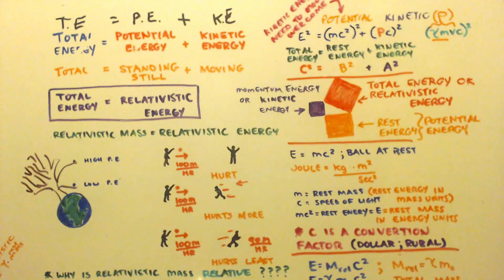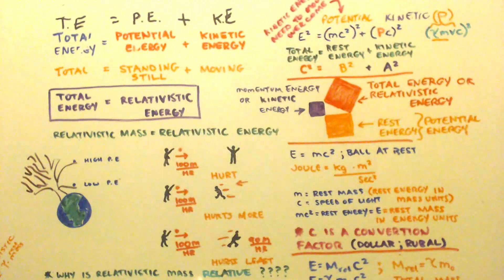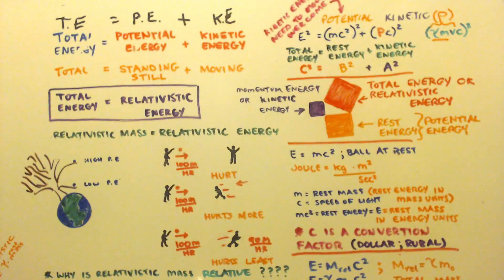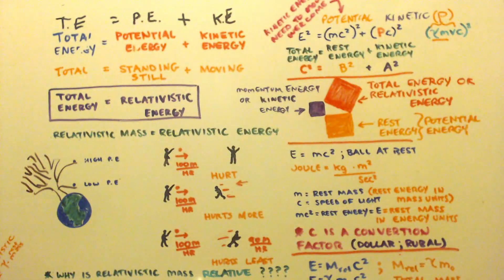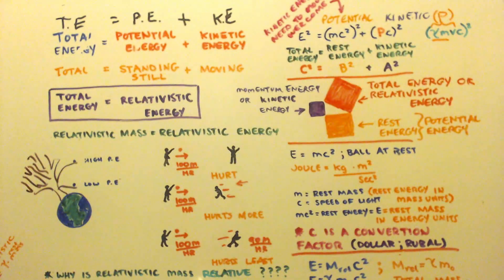We all know what potential energy is from high school or junior high. Here's the earth, here's a little tiny tree on the earth. You can see there's a ball on a branch up high and a ball on a branch down low. If you're on earth, which one would you want falling on your head? The one down here, because the high one is going to really hurt. It has more energy — it's going to smash into your face. And as it drops and it's moving, now it's getting kinetic energy.